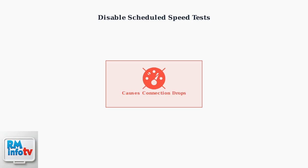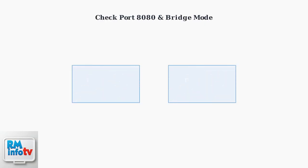Disable any scheduled automatic speed tests, as these have been known to cause connection drops and interfere with stable internet connectivity. Ensure your Unify device and application can communicate on TCP port 8080. Also verify your modem router combo is in bridge mode to prevent subnet conflicts.